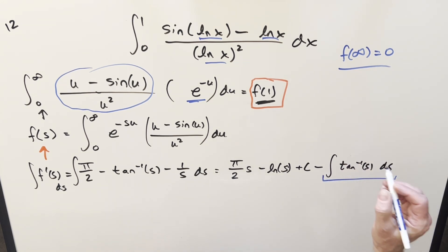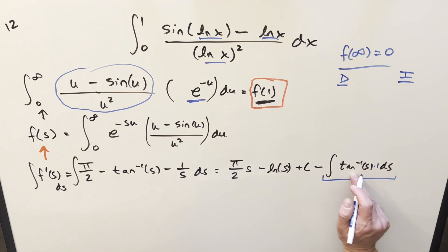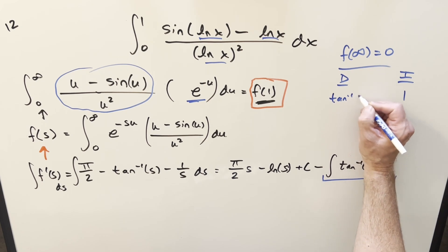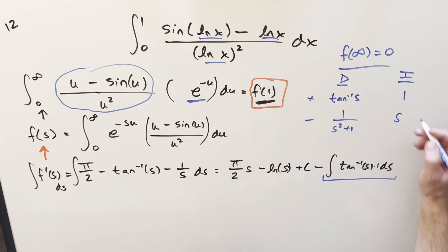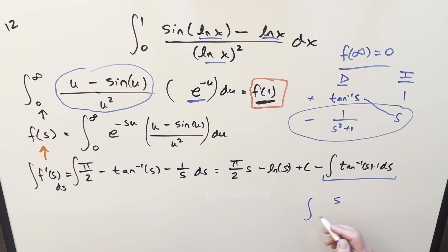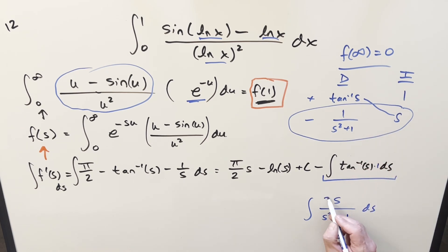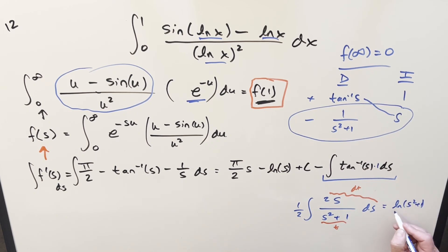For the integral of arctan(s) ds, using integration by parts with the DI method: differentiate arctan(s) to get 1/(s² + 1), and integrate 1 to get s. That gives s·arctan(s) minus the integral of s/(s² + 1). For that remaining integral, multiply by 2/2 so the numerator becomes the derivative of the denominator, giving (1/2)·ln(s² + 1).